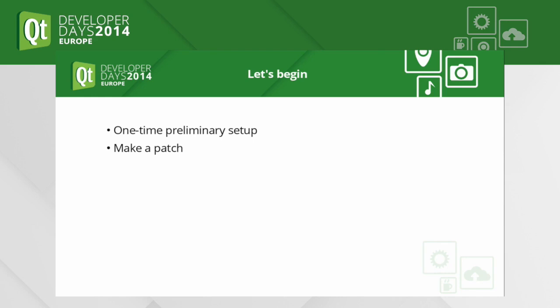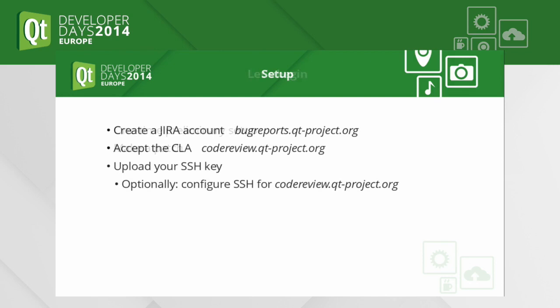End of the theory — let's just do something. How does it work in practice? There are basically two main steps. One is a setup you need to do once, which consists of cloning the code, compiling it, and so on. Once we do that, we can start making patches. For the setup, you need to create an account at bugreports.qtproject.org — click login, click sign up, create an account.